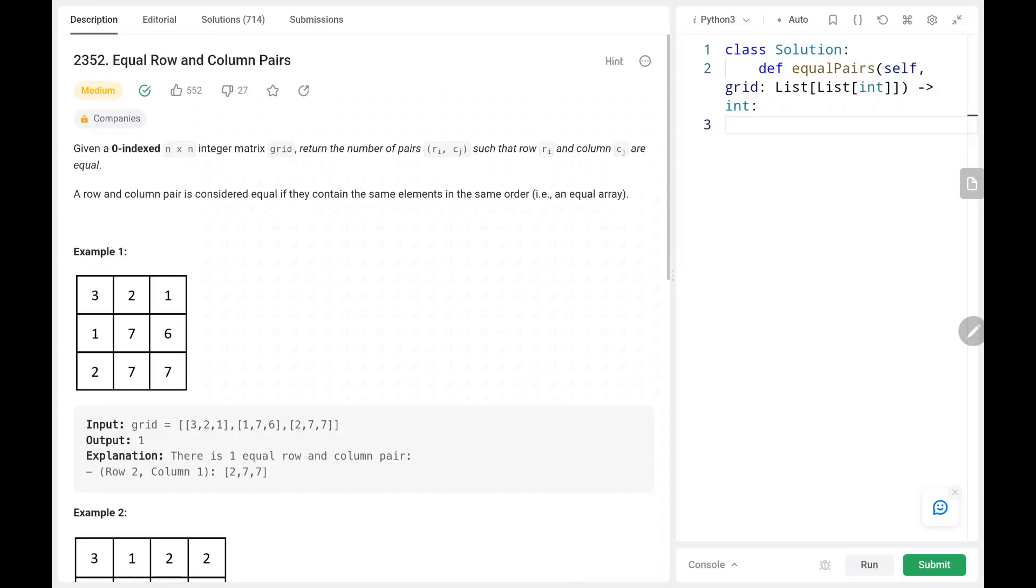Hey everyone, welcome back. Today we are going to solve problem number 2352, Equal Row and Column Pairs. First we will see the explanation of the problem statement, then the logic and the code. Now let's dive into the solution.